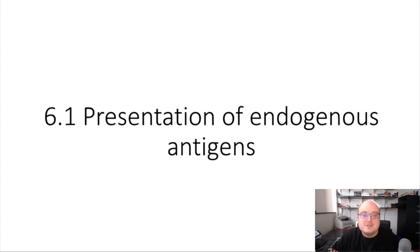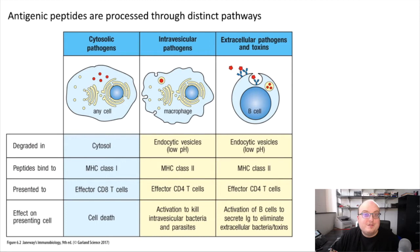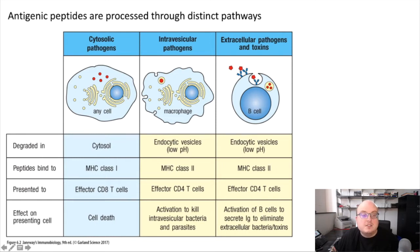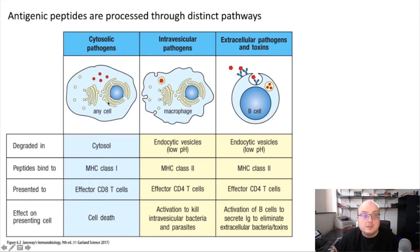What do we mean by endogenous antigens? Different types of pathogens are found in different locations relative to the cell or tissue where they reside. We might have cytosolic pathogens, those pathogens that primarily live inside intracellular vesicles, as well as extracellular pathogens and toxins. We'll start by talking about cytosolic pathogens, because these are typically what we mean when we refer to endogenous pathogens, and therefore their antigens are endogenous antigens. Pathogens that live inside the cell include all viruses, a number of small bacteria, and even a few obligate intracellular parasites.